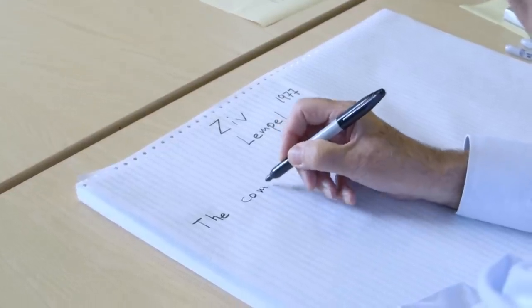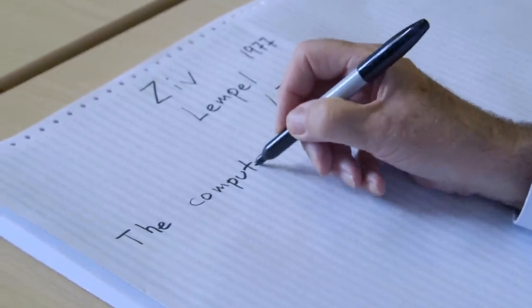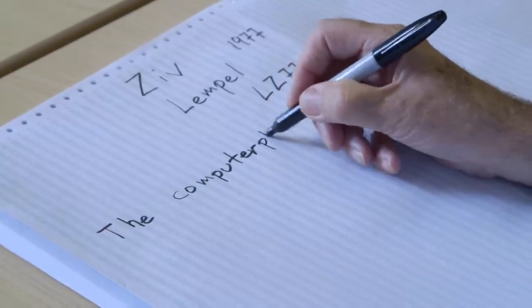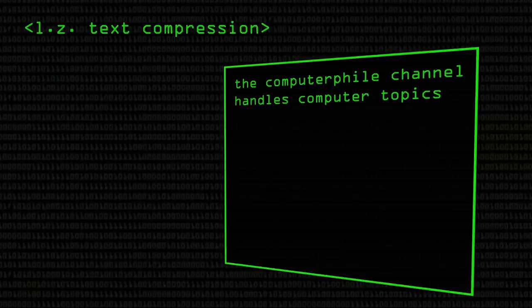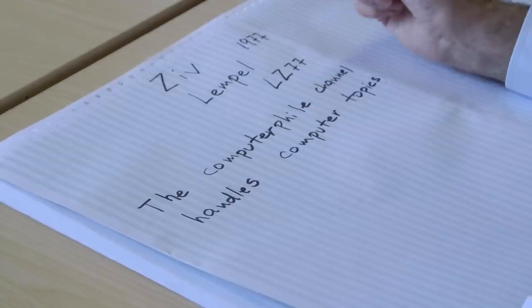Let's say we've got something like this. The Computerphile Channel Handles Computer Topics. In my original explanation I put to you the idea of having a dictionary of well-known words and buzz phrases up at the top of the file with pointers to where all these words occurred and if in doubt use the pointers for repeats of certain words.